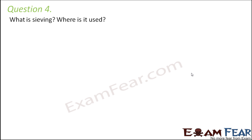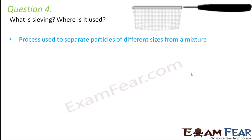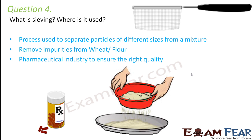Question number 4: what is sieving and where is it used? Sieving is a separation technique where particles of different sizes are separated from a mixture using a sieve with tiny pores. The tiny particles pass through while bigger particles are blocked. It is most commonly used to remove impurities from wheat or flour, and is also used in the pharmaceutical industry to ensure the right quality of raw materials used in making medicines.